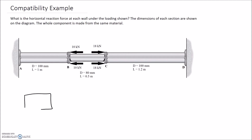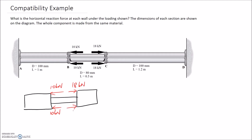Let me draw a smaller version. On this free body diagram, we're going to have the four externally applied forces — the two 10 kN forces and the two 18 kN forces. We're looking for the horizontal reaction forces at each wall. Since the bar exerts a force onto the wall, the wall exerts a force back onto the bar. I'm going to guess the direction on the left end is to the left, and on the right end it's back to the right. It looks like these two forces are going to push into the wall, so the wall needs to push back.